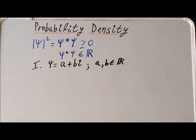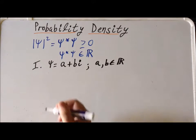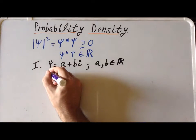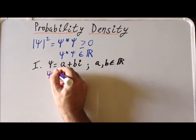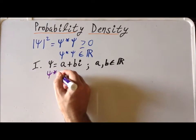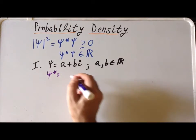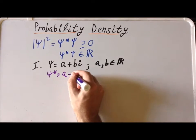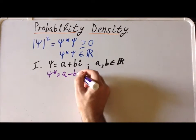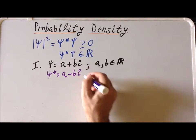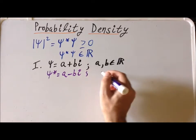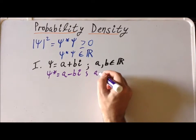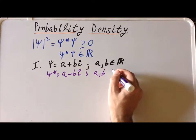Recall also that if that is our wave function, the complex conjugate psi star is going to be equal to a minus bi. Again, a and b are both real numbers.